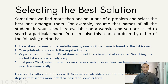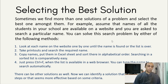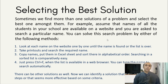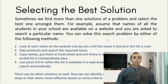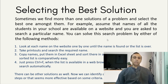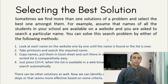There can be other solutions as well. We can identify a solution that has fewer steps or seems more effective based on some criteria. Some problems are well defined and their solutions are easy to find, but some problems are complex and require step-by-step solutions. If you haven't read the first lesson, please do so. Thanks for watching — if you have any query or question, please comment on the video or WhatsApp your question. Thank you.